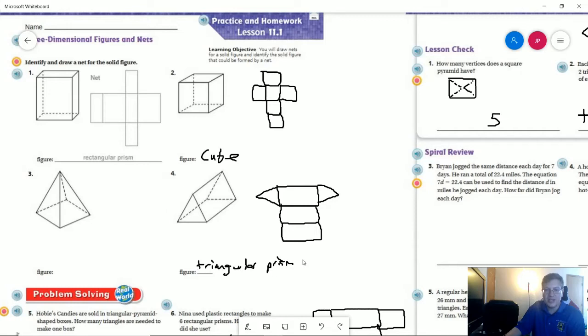Number four, we are going to have a triangular prism. Again, this is going to be our base or bases. And then we are going to have three rectangles. We are going to see that again when we get over to number two on the next page.